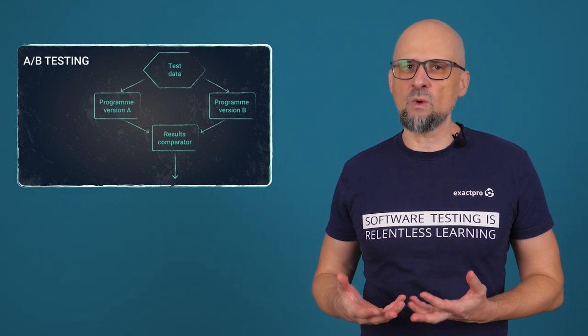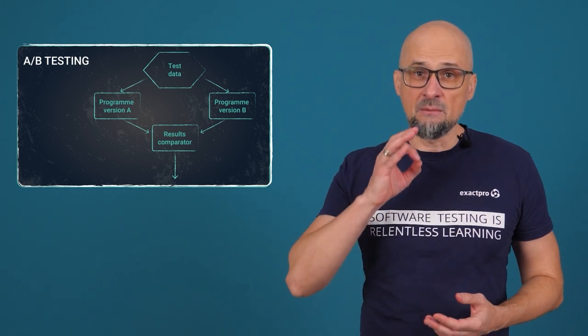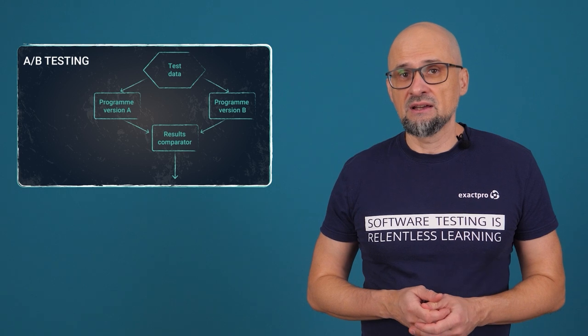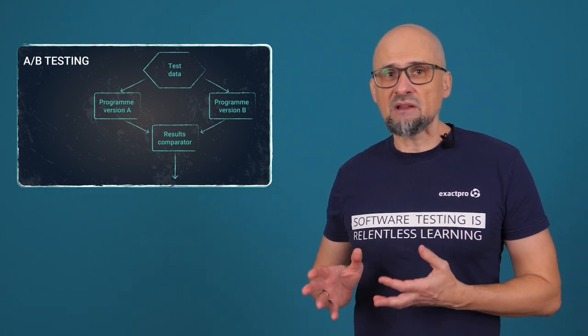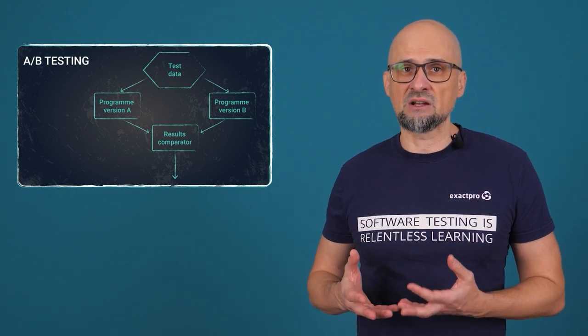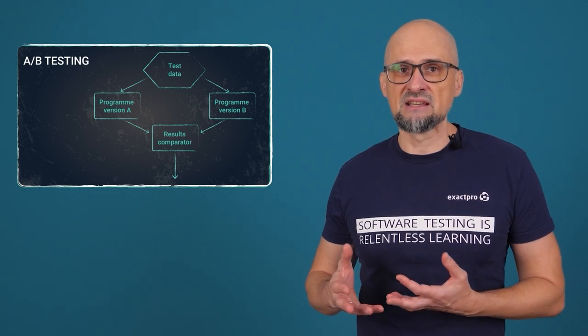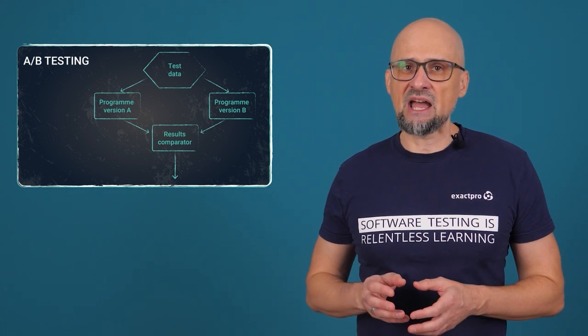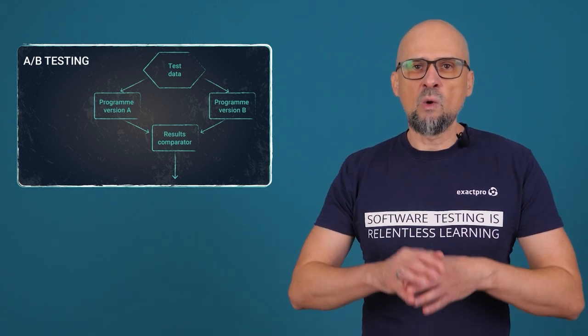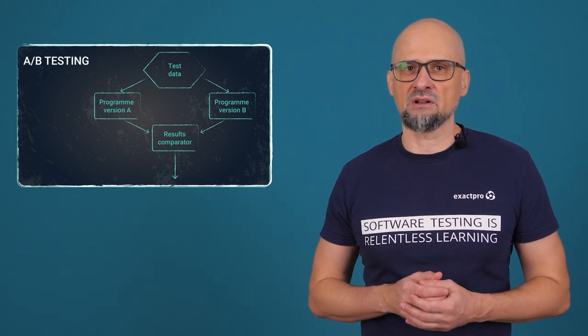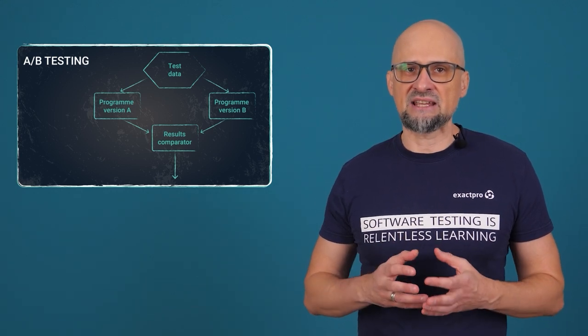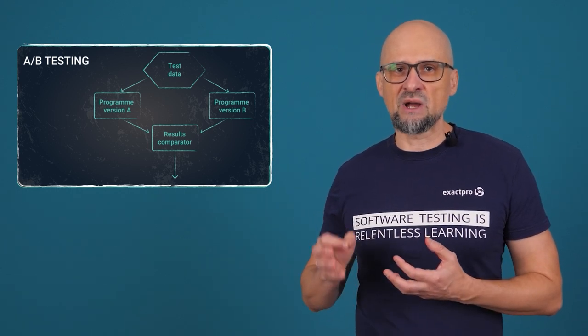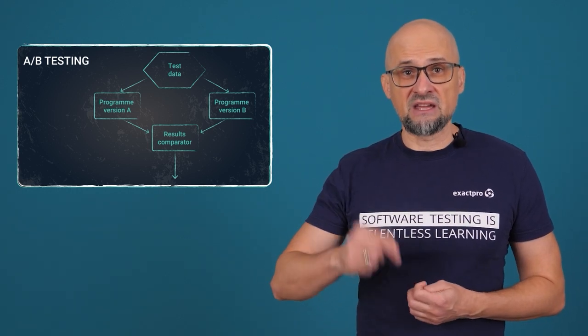A/B testing is a method where the response of two versions of the program to the same inputs are compared to establish which is better. It's a statistical testing approach which typically requires the comparison of test results from several test runs to determine the difference between the programs. A/B testing may help solve the test oracle problem where the existing system is used as a partial oracle. It can be used to test AI-based systems updates by checking that the updated variant performs as well as or better than the previous variant.